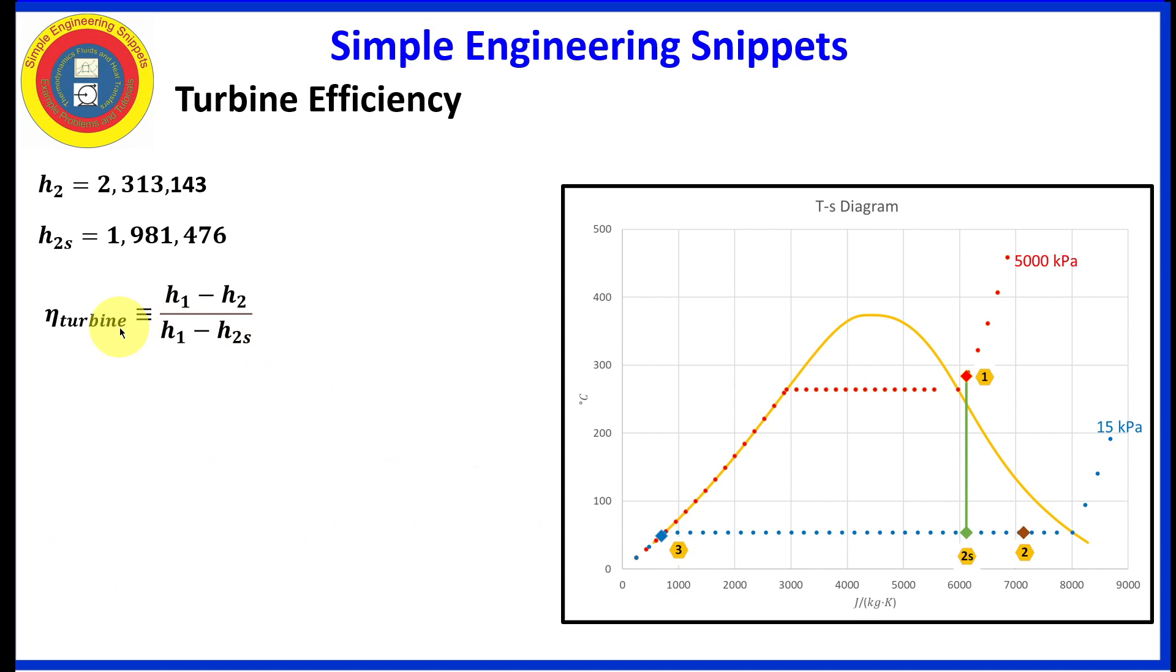Let's return and knock off this example and complete our calculation of the efficiency of the turbine. We have all the enthalpies that we need. So plug in the values. We get the turbine efficiency is equal to 0.63 or 63%.